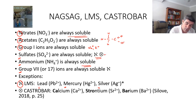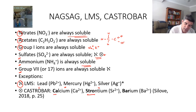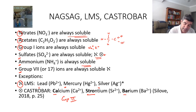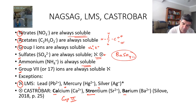The sulphate exceptions also include the Castro bar: calcium, strontium, and barium — these are group 2 metals. Calcium sulphate, strontium sulphate, and barium sulphate are each also insoluble. So we have our general rules and then we look at our exceptions — for example, barium sulphate would form a solid precipitate.